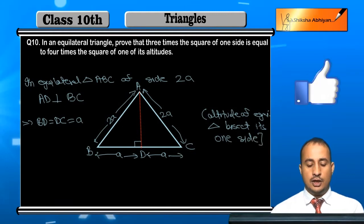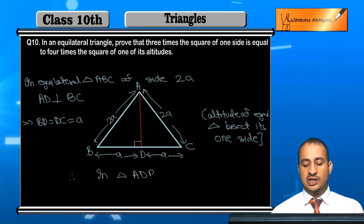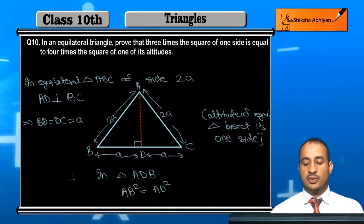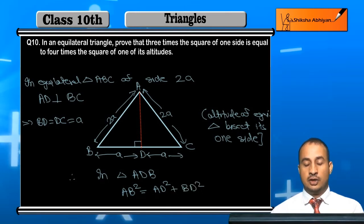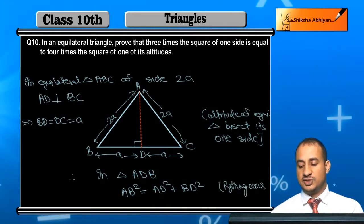Therefore, in triangle ADB, which is a right triangle, I can write: AB squared is equal to AD squared plus BD squared. This is from the Pythagoras theorem.